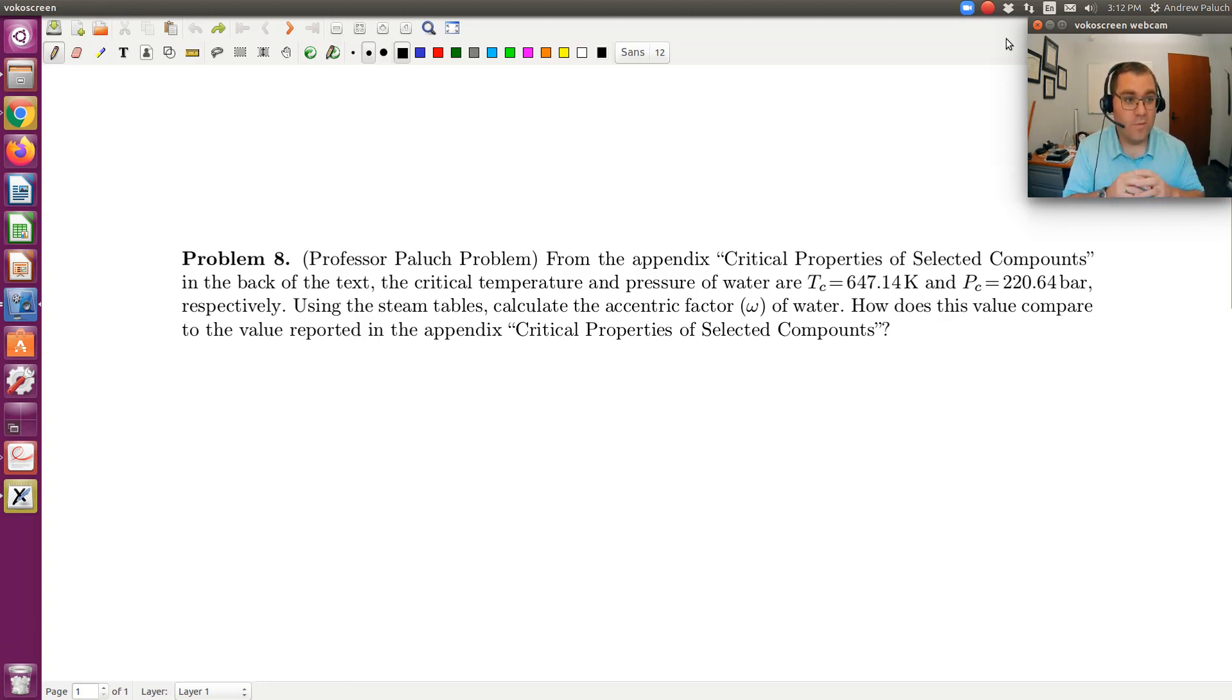Okay, and so before we read the problem statement, I will apologize in advance for my misspelling of compounds. We'll have to make sure we fix that. Okay, but anyways, from the Appendix, so this is Appendix A, critical properties of selected compounds in the back of the text. The critical temperature and pressure of water are that. So temperature in Kelvin and pressure in bars. Using the steam tables, calculate the eccentric factor of water. And then how does this value compare to that reported in the back of the books?